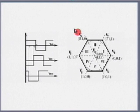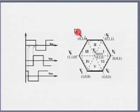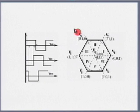The most common PWM strategy is the sinusoidal PWM technique, wherein there are 3 sinusoids displaced in time by 120 degrees. The frequency is equal to 50 hertz if I want a 50 hertz supply. It is compared with a high frequency triangular waveform. The frequency of the triangular waveform determines the switching frequency and therefore the frequency of the predominant harmonic.